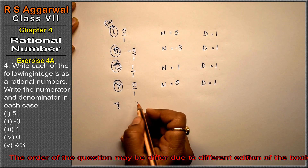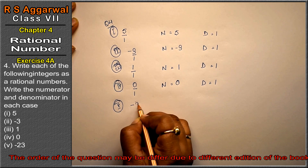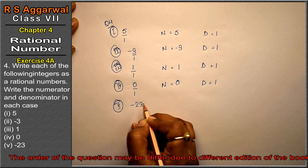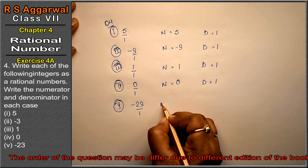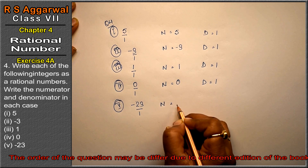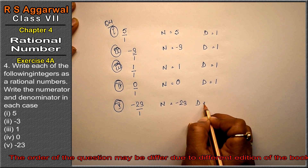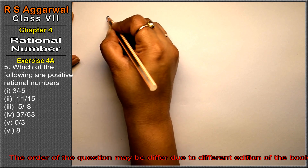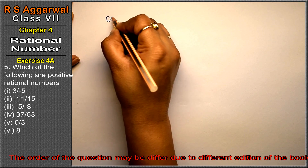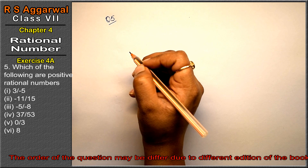Fifth part is minus 23. We write minus 23 upon 1, so the numerator is minus 23 and the denominator is 1. That is the answer. Now let's do question number 5 of exercise 4a, rational numbers.